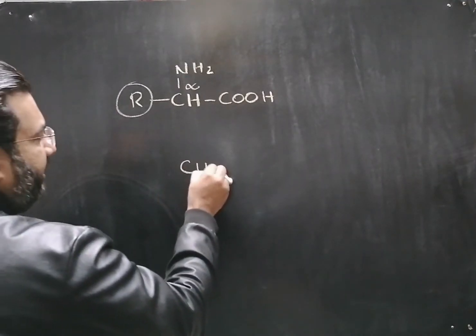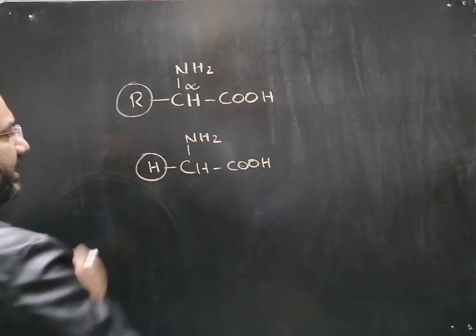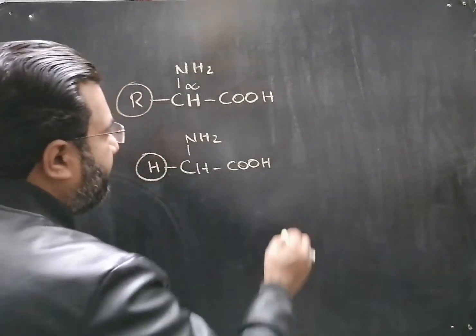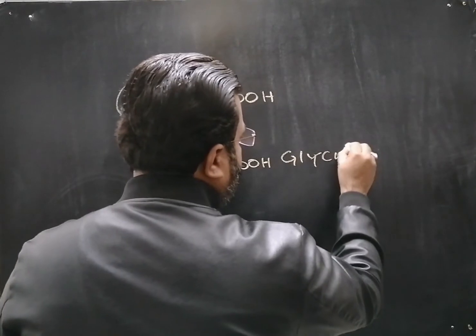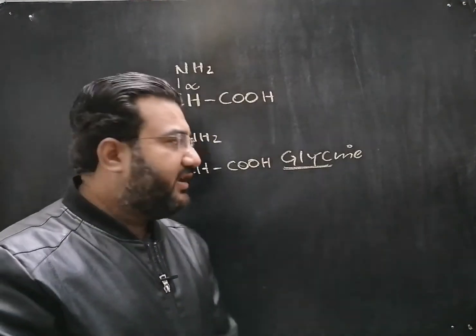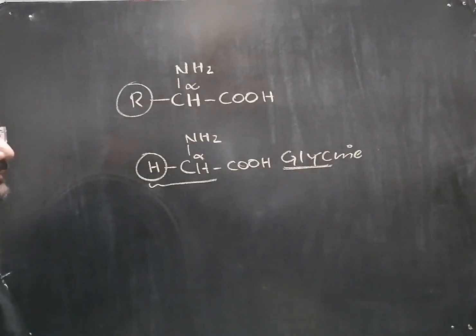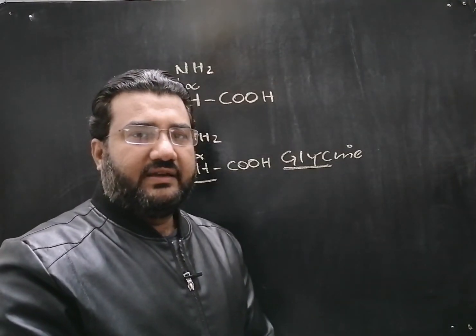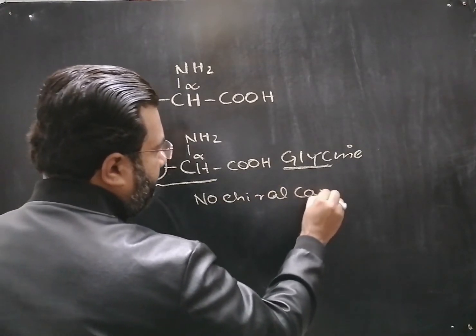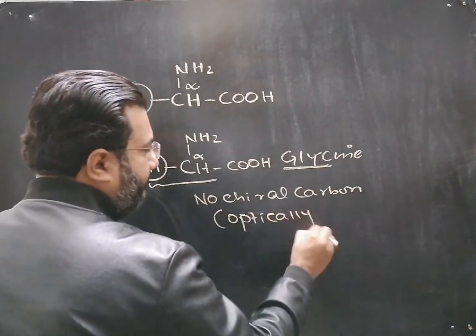For example, if we attach hydrogen at the place of the R group, this gives the simplest amino acid, which is sweet in taste and is called glycine — the word glycine means sweet. Glycine is the only amino acid in which the alpha carbon has two hydrogen atoms. It is the only amino acid with no chiral carbon, and therefore it is the only amino acid which is optically inactive.